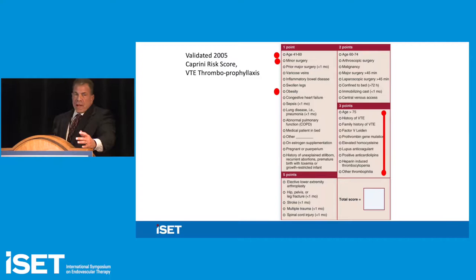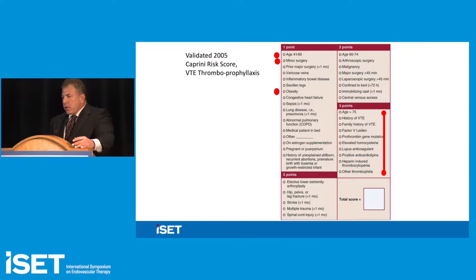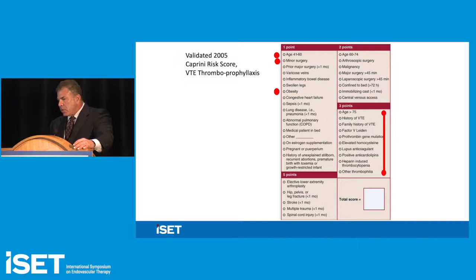For thromboprophylaxis before procedures, Joe Caprini's score is validated and useful. You assess one, two, or three points per risk factor and add them up to get a risk score that guides prophylactic measures. Age is a major factor — one point for lower age, increasing points with age. Minor surgery is one point; older age, history of venous thromboembolic events, and thrombophilia-type factors each carry three points.